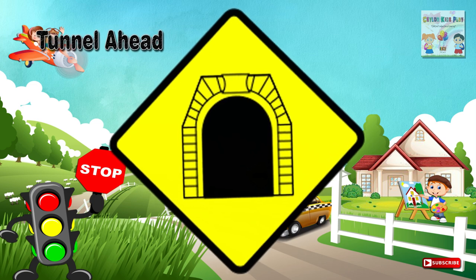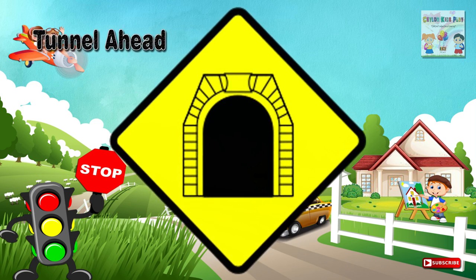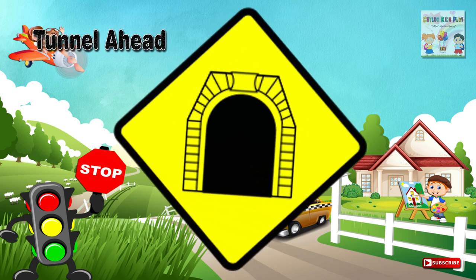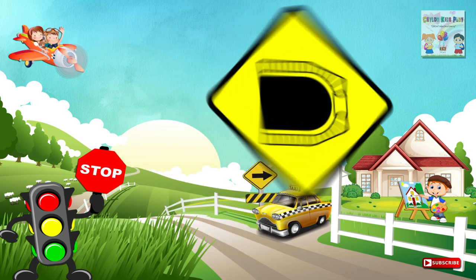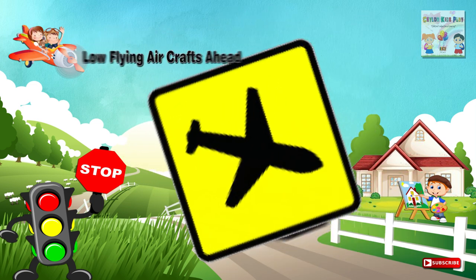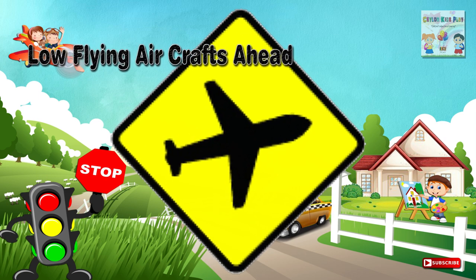Forty-eight: Tunnel ahead — a place on a road ahead where a tunnel is located. Forty-nine: Low flying aircraft ahead — an area ahead for low flying aircraft.